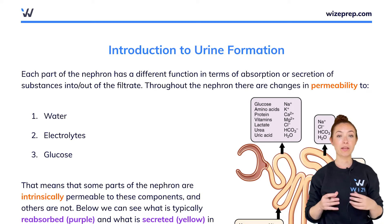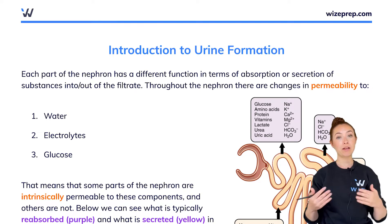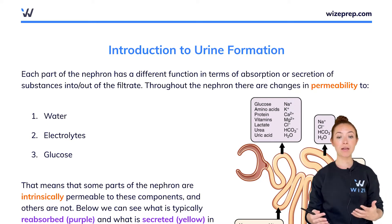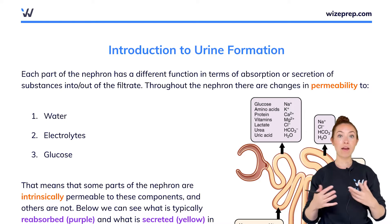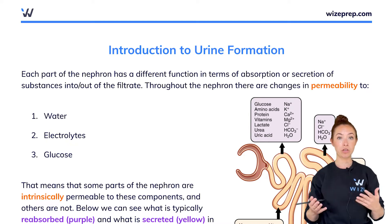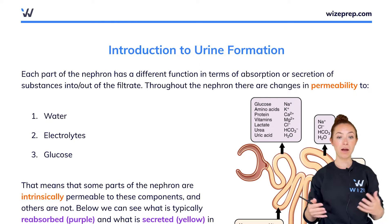The goal of the renal system is to produce urine. In this lesson I'm going to introduce some basic concepts about urine formation so that as we go through the different parts of the nephron that you'll need to memorize for the MCAT, you can keep the big picture in mind. I'll also talk about some basic concepts to keep in mind as we go through the different parts of the nephron, how they differ from one another and why.